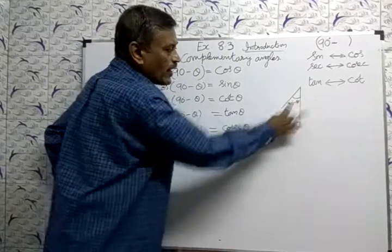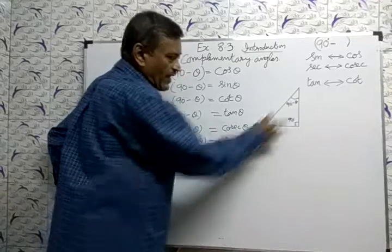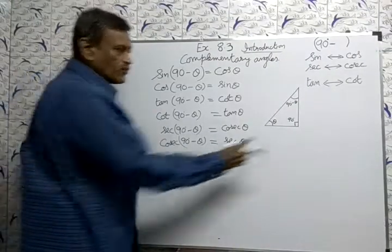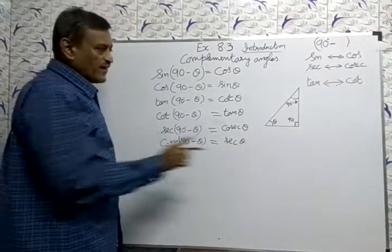The remaining 2 angles sum equal to 90. Reason: whole triangle sum of all 3 angles is equal to 180 degrees. So this is 90, subtract remaining angles sharing 90 degrees. One is theta.